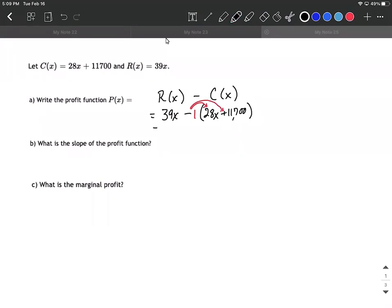Okay, so as we distribute that, we'll get 39x minus 28x minus 11,700, which works out to be 39x minus 28x makes 11x minus 11,700. And that's going to represent our profit function.